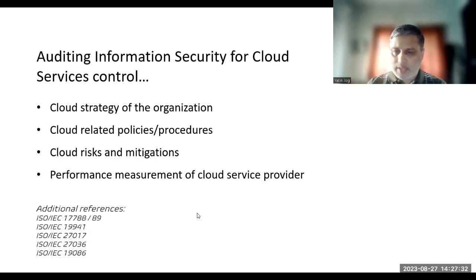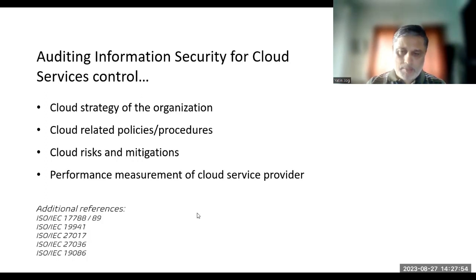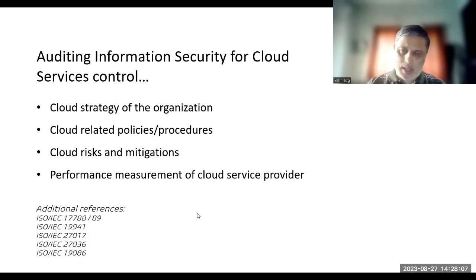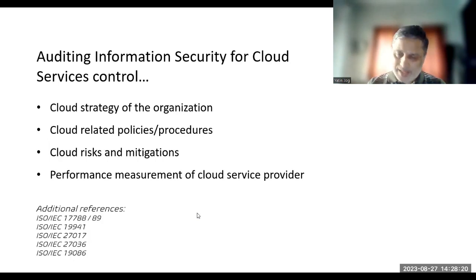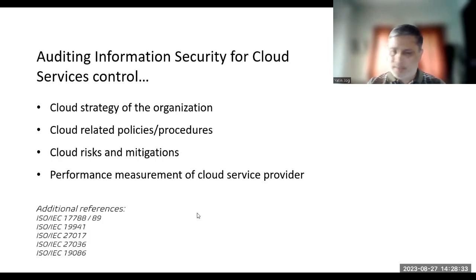ISO 17788 and ISO 17789 are for more cloud services related information. If you want more information on cloud portability and exit strategies of cloud operations, ISO 19941 can give you more information. For more information about information security and public cloud services, you can refer to ISO 27017. For supply relationships for cloud services, refer to ISO 27036. Cloud service agreements - what should be the content of the cloud service agreement - is covered in ISO 19086, which also talks about the security and privacy-related controls that should be part of your agreement. More details you can see in these available standards. Hope this video will be helpful for all the ISMS implementers and auditors of the new standard.